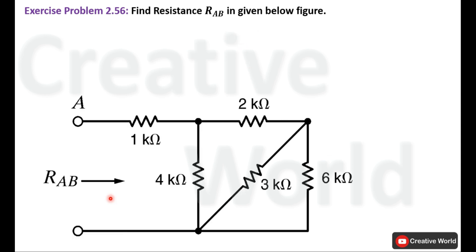This is the circuit diagram of the given problem. We have to find the resistance between these two points labeled as R_ab. We will start solving this problem from the right side and simplify the circuit from right to left.